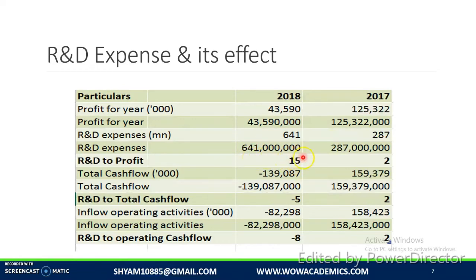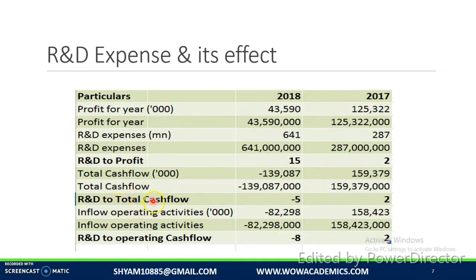This is a very bad position where they are using a lot of money and investing in R&D, and all the R&D is only expensed — not creating any intangible asset. Using R&D to total cash flow: R&D divided by total cash flow for the year gives five times. So in a single year, five times the cash flow they generated has been invested in R&D — meaning five years of cash flow has been invested in R&D in one year.